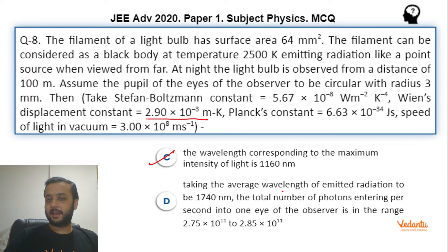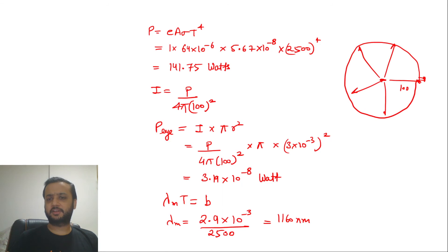Okay, let's check for option D. Average wavelength of the emitted radiation, we can find the total number of photons entering per eye. This is again a straightforward question.